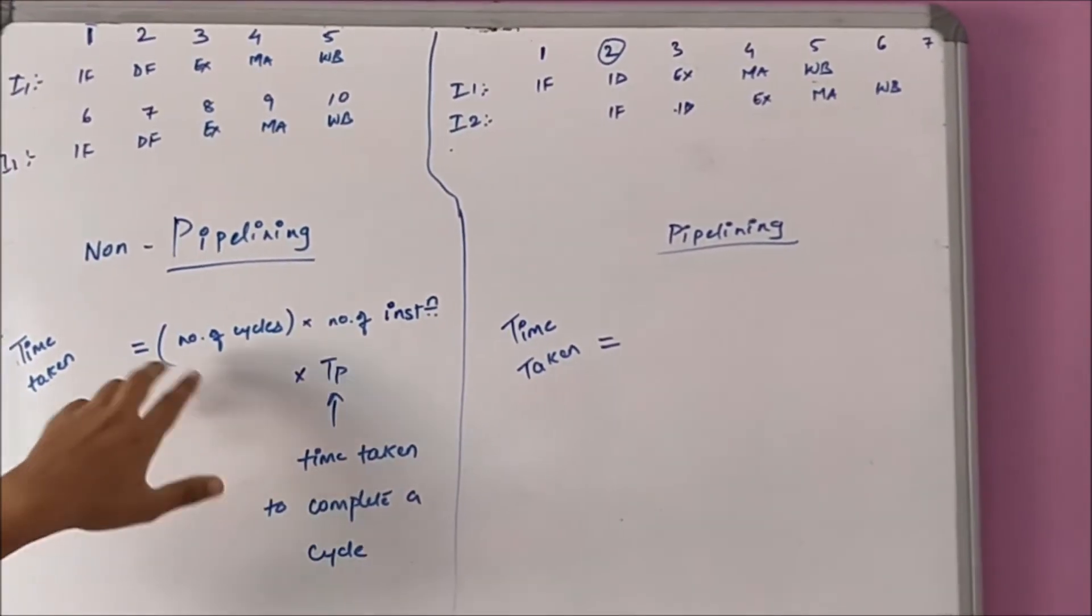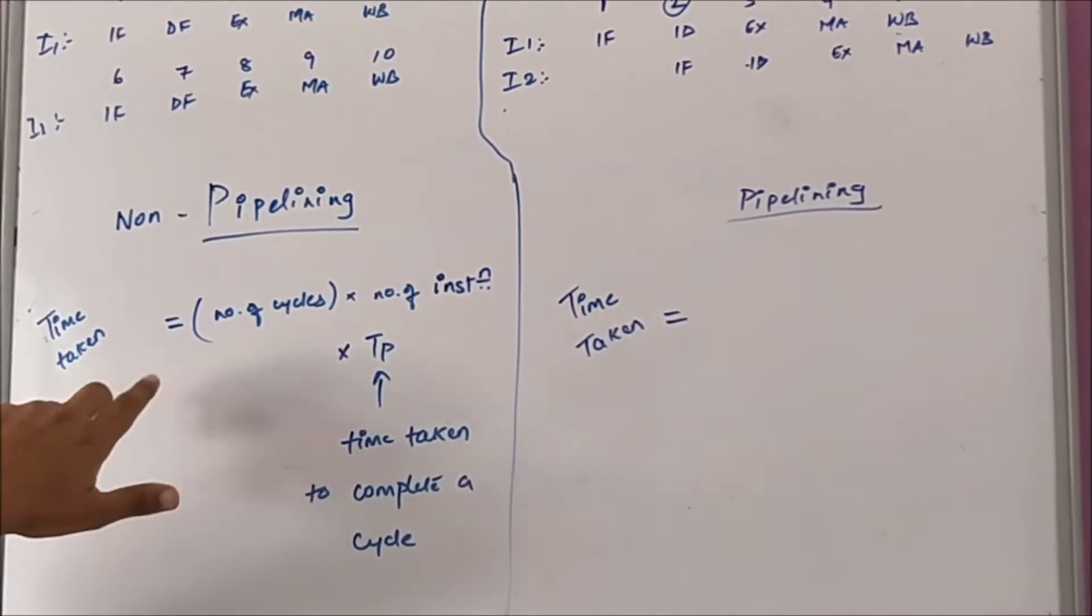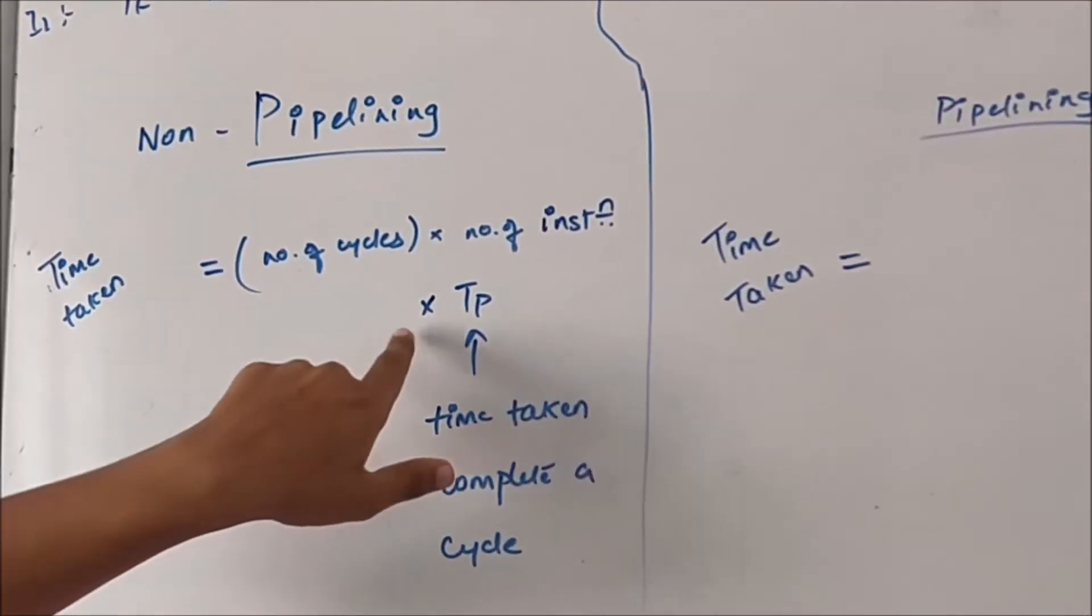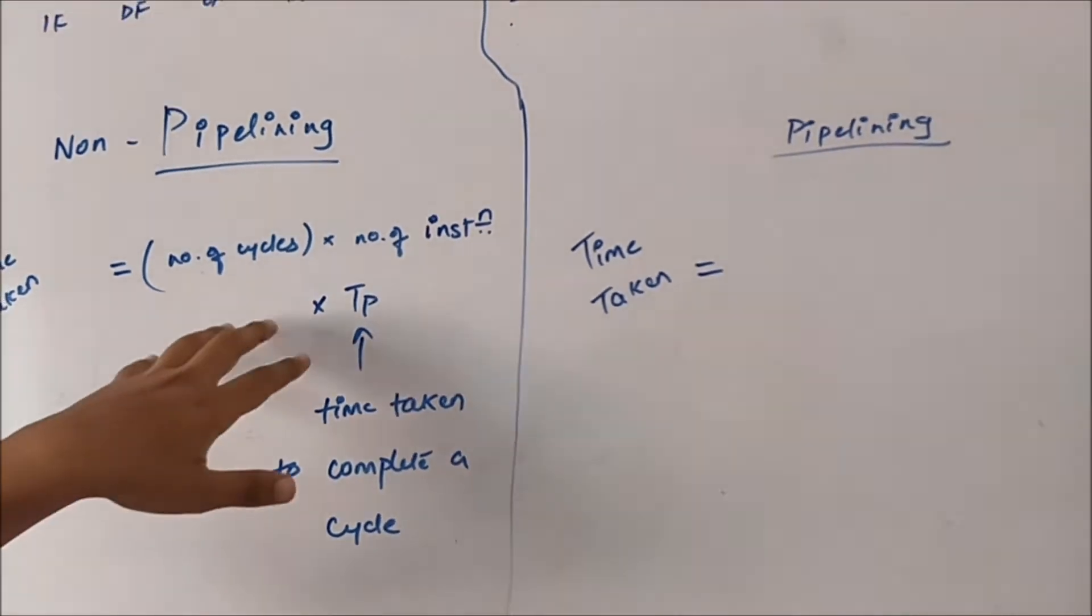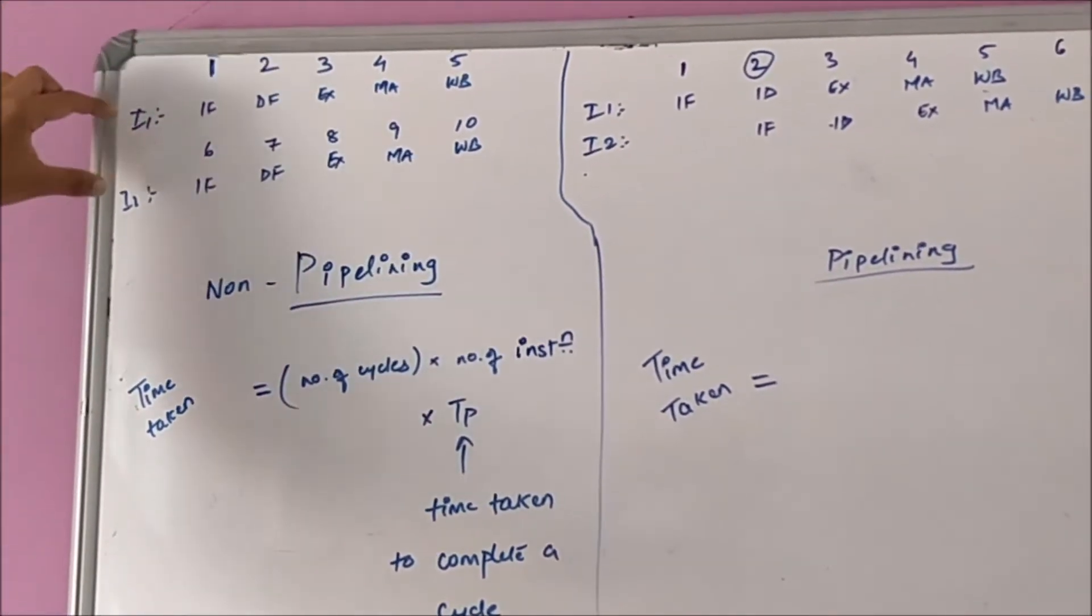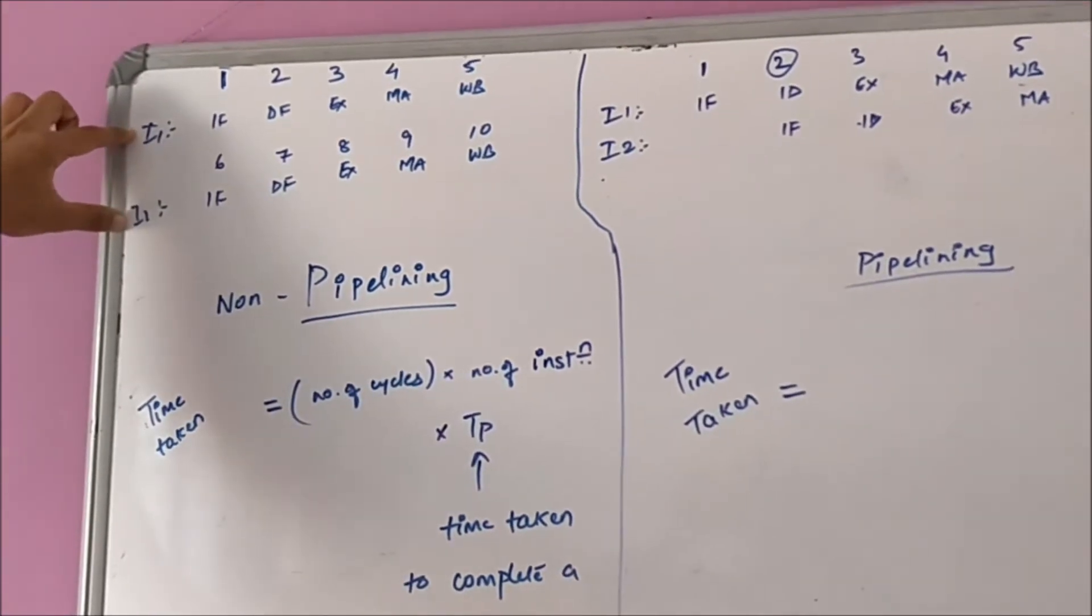We know that non-pipelining architecture takes time of number of cycles into number of instructions into TP. TP is time taken to complete a single cycle. Why is that so? Because here, number of cycles will be of both the instructions.